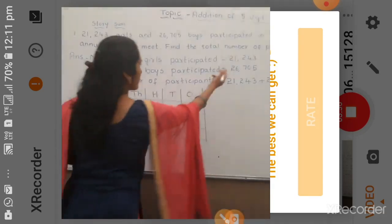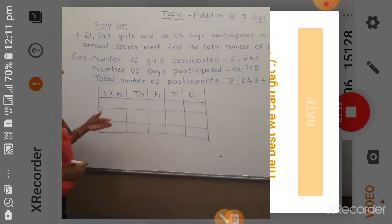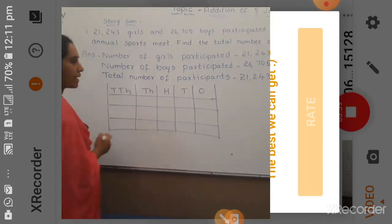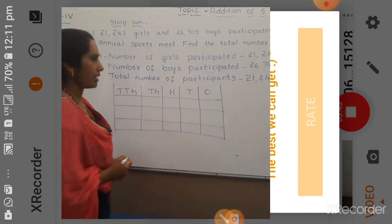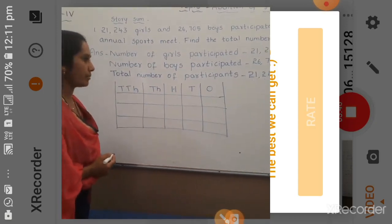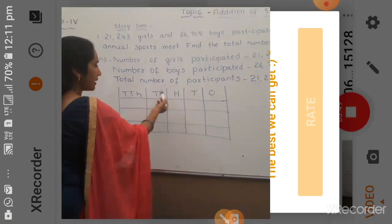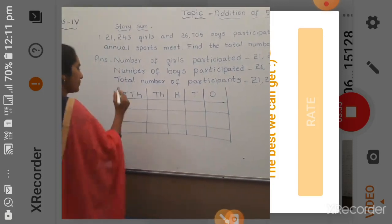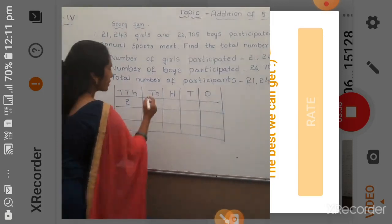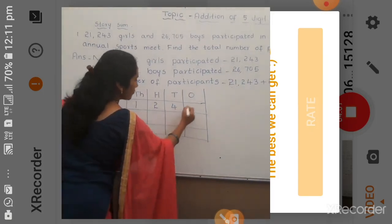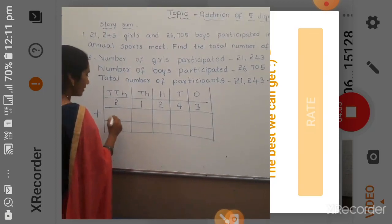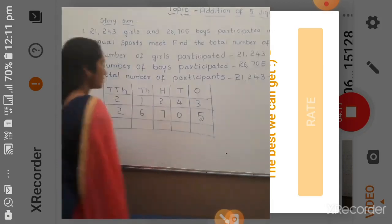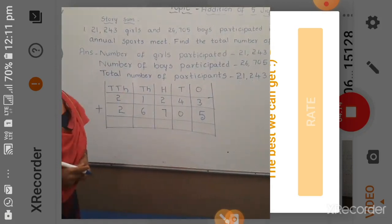The first number — number of girls — is 21,243. The places are 1, 10, 100, 1000, and 10,000 — 5 places. For the 5-digit number the places go up to 10,000. Now we will arrange the numbers. First we write the girls: 21,243. Next we add the boys: 26,705. This is how we arrange the 5-digit numbers under those places.